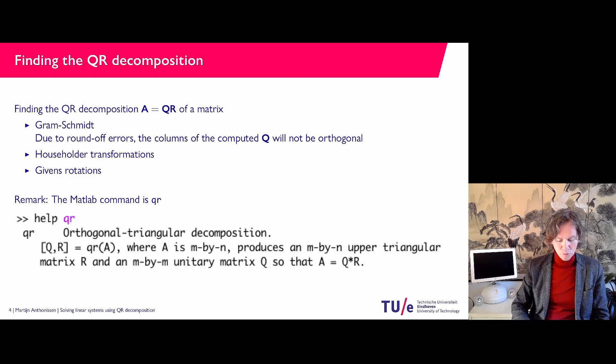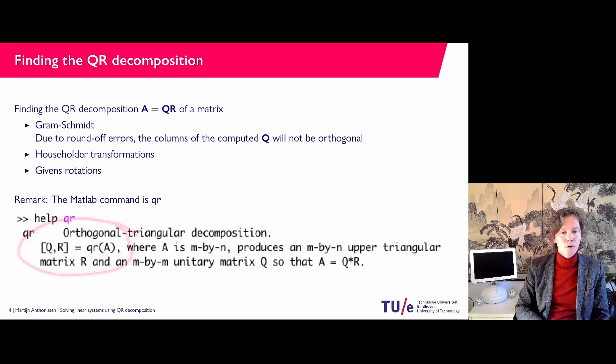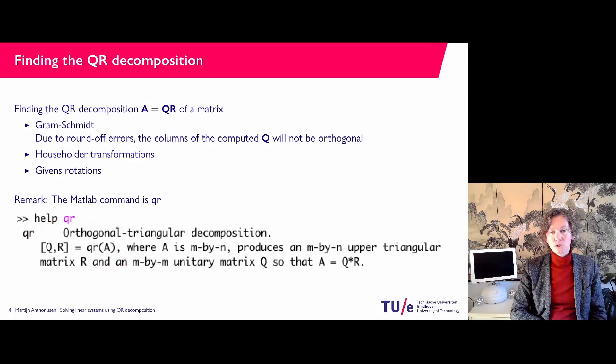If you look in MATLAB you can use the QR command. You can call it like this: you ask for two matrices Q and R from QRA. Your matrix does not need to be square, and it will produce an upper triangular R and a unitary or orthogonal if it's real matrix Q.